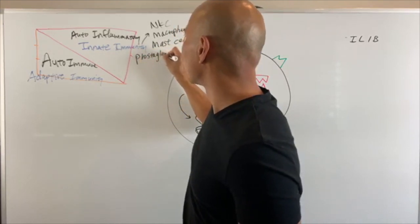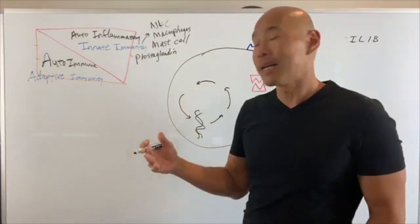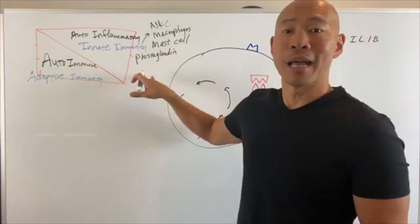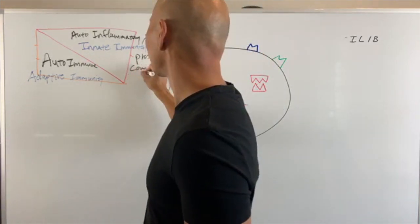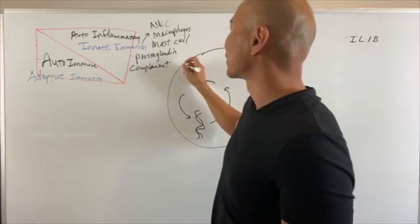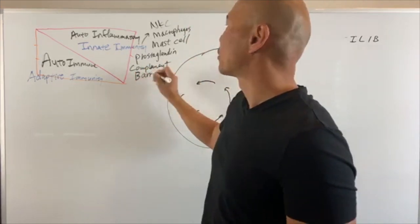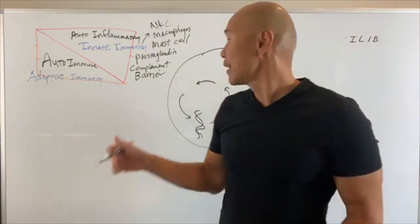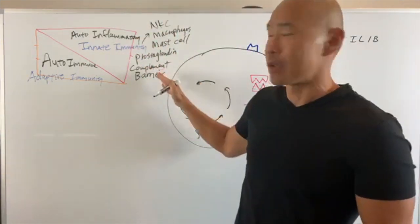Prostaglandins are a type of immune chemical that triggers inflammation. When you take ibuprofen, it's affecting the prostaglandin system — trying to shut it down so you don't feel pain. Other innate components include the complement system, and your actual physical barriers like your skin barrier and blood-brain barrier. These are all part of your innate immunity — it's built into you.